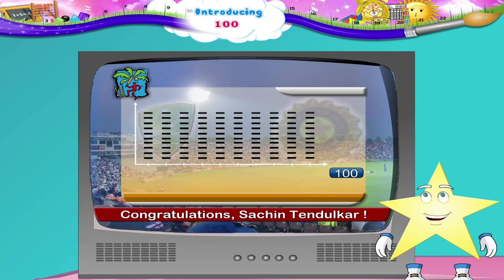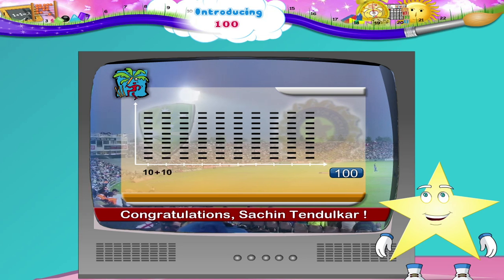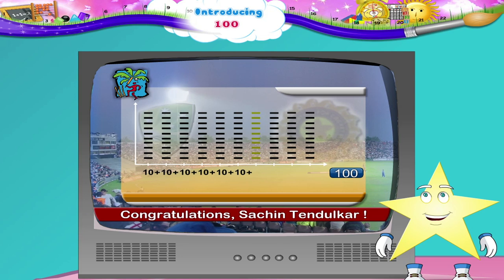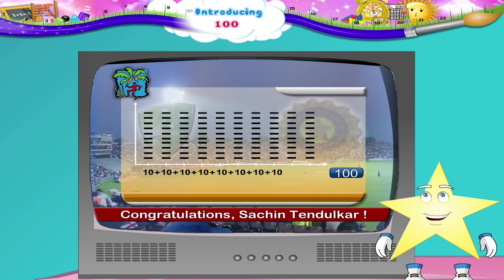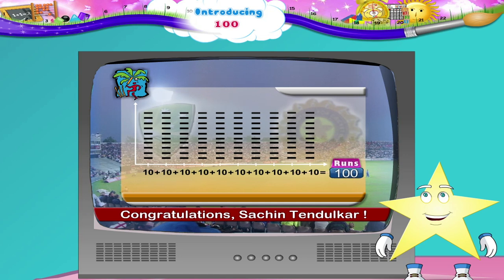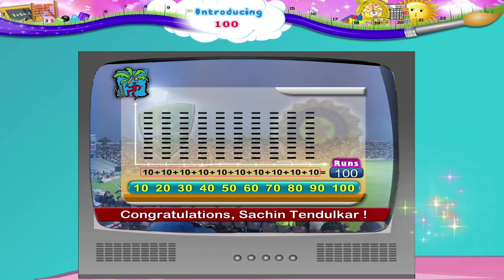Suppose we draw lines on this board for each run. That's 10. That's 10, 10, 100. Stari, let's count the tens again: 10, 20, 30, 40, 50, 60, 70, 80, 90, and 100!